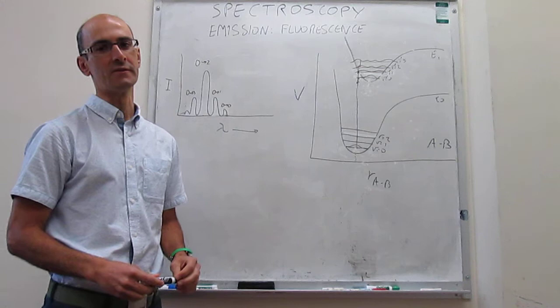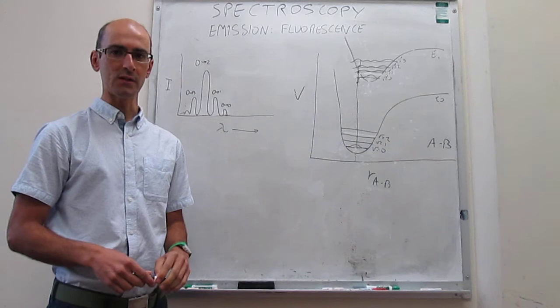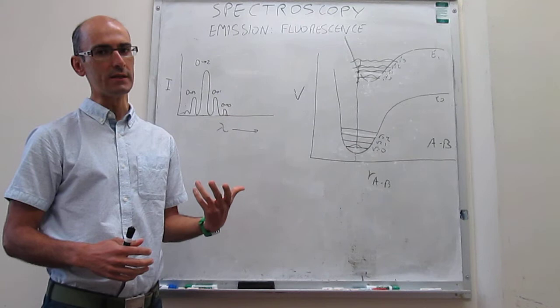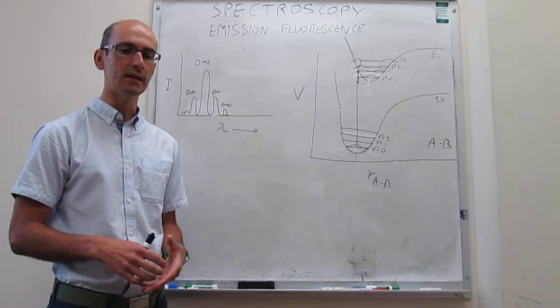We now start a series of videos in which we study emission spectroscopies. The first type of emission spectroscopy that we will investigate is fluorescence. To study fluorescence, we depart from UV-Vis absorption, which is what we have studied in prior videos.